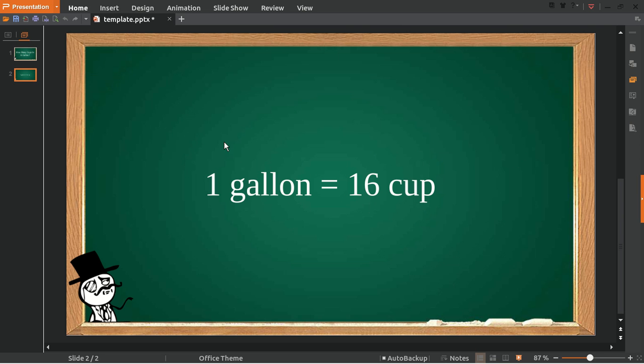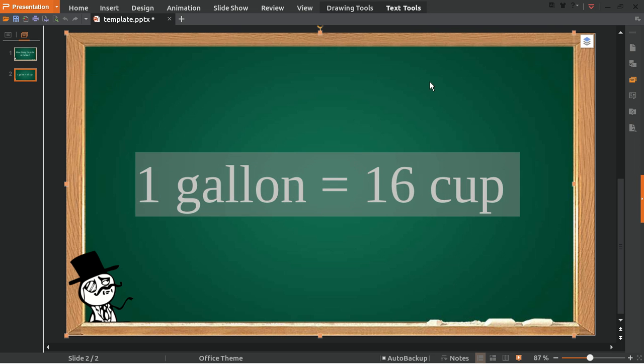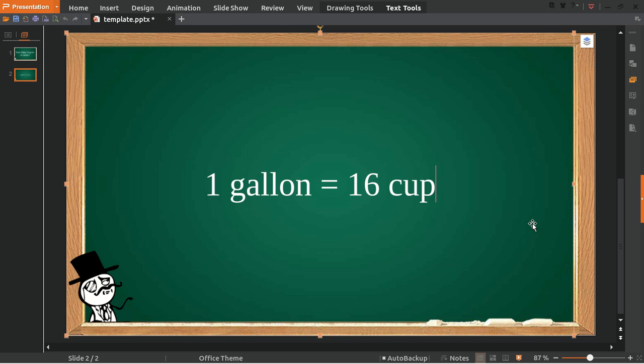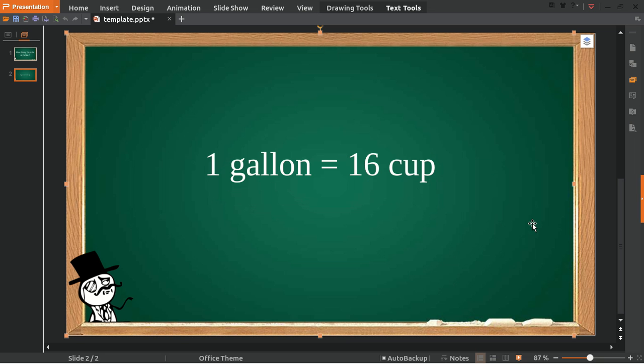One gallon is equal to 16 cups. That's the basic formula, but we won't stop here. We are going to create a question and answer it.